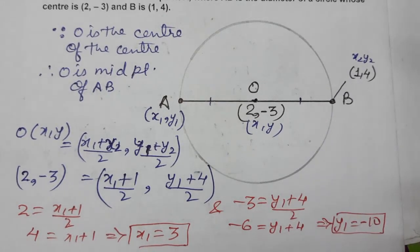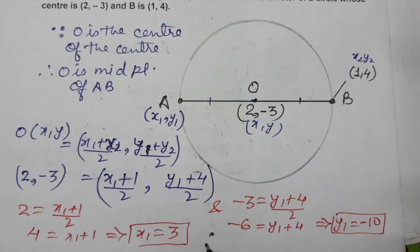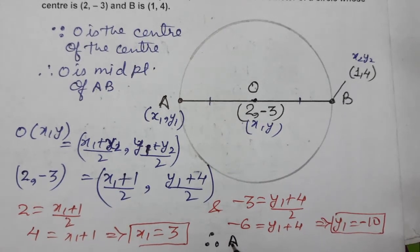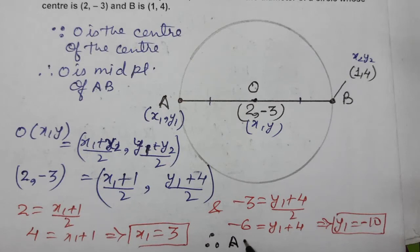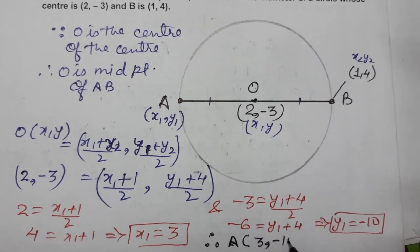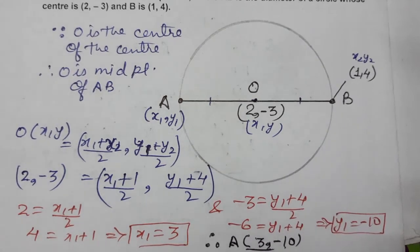Therefore, the coordinates of A are (3, -10). These are the coordinates of A.